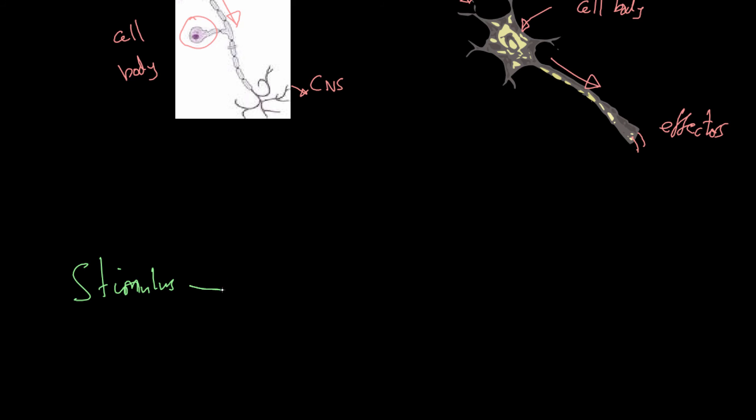The stimulus will then be detected by a receptor. The receptor will then send a signal down the sensory neuron. Do bear in mind that it might not just be one sensory neuron, but we're going to keep it simple for this.